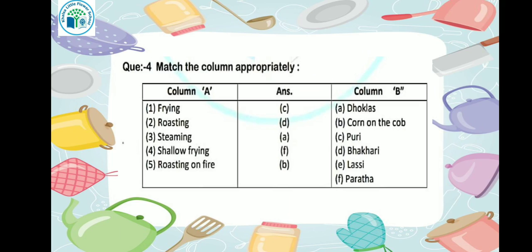Next is roasting — what do we make by the roasting method? As I told you in the MCQ section as well, by roasting we make bhakri. So our answer will be option D.